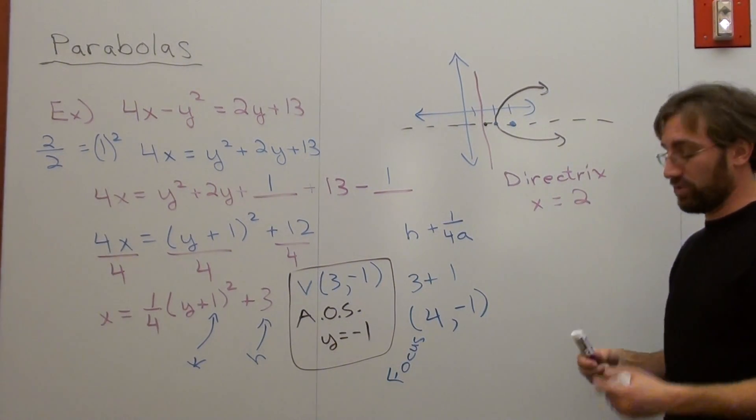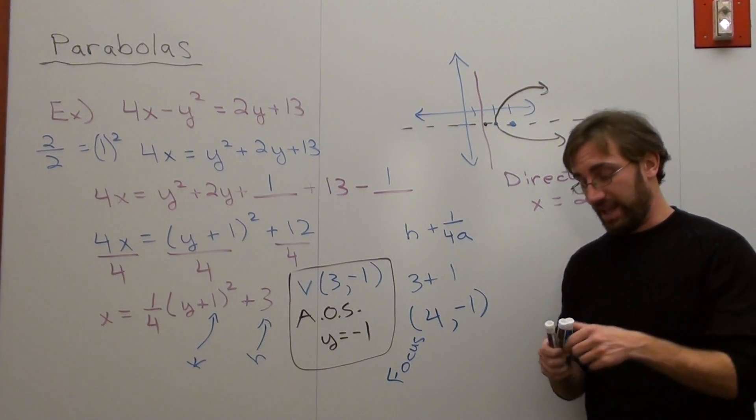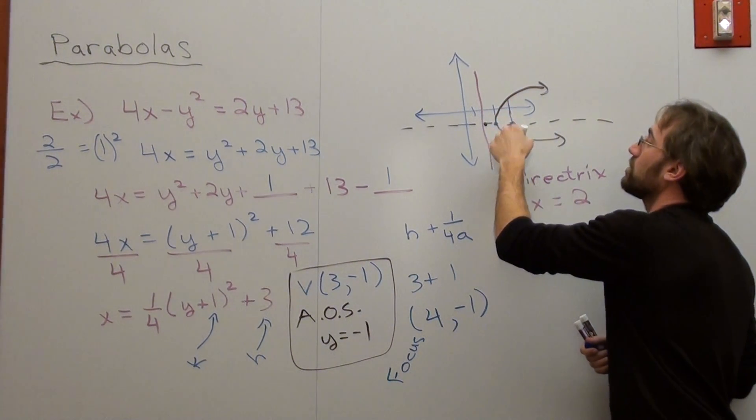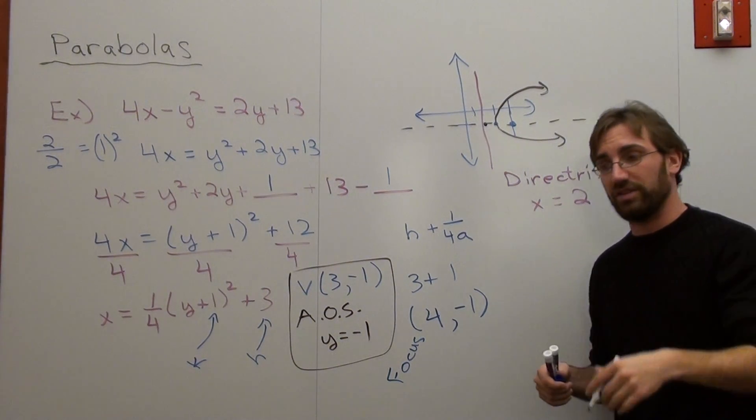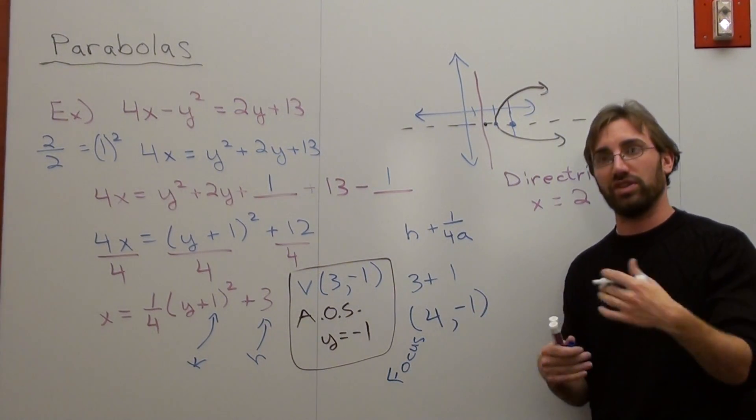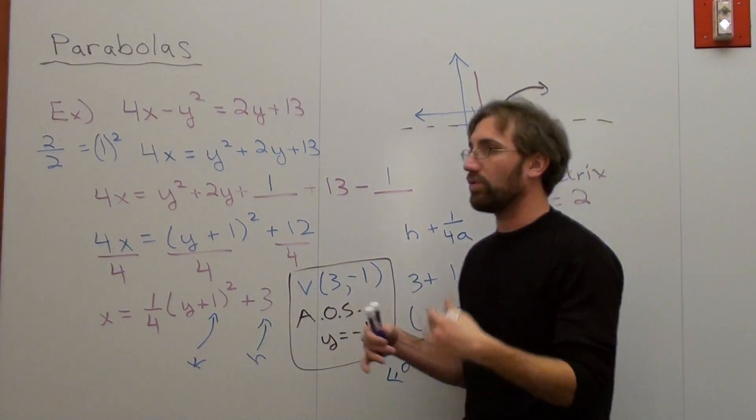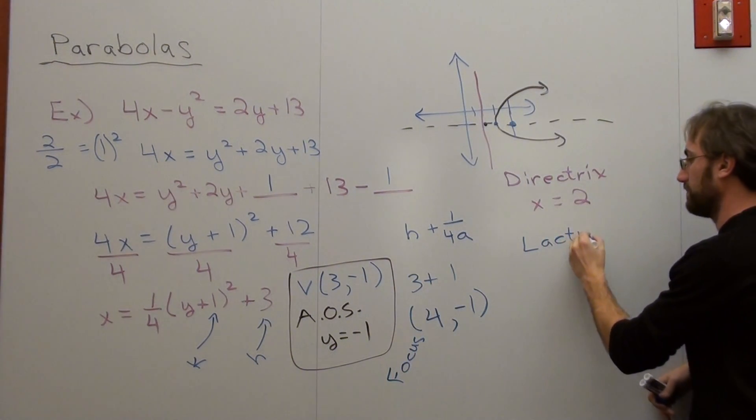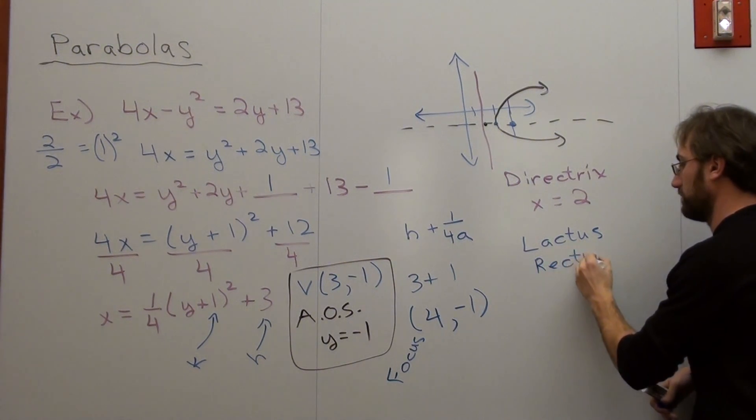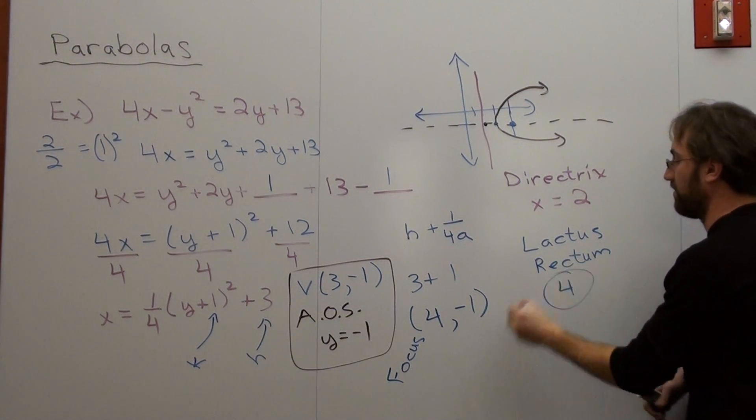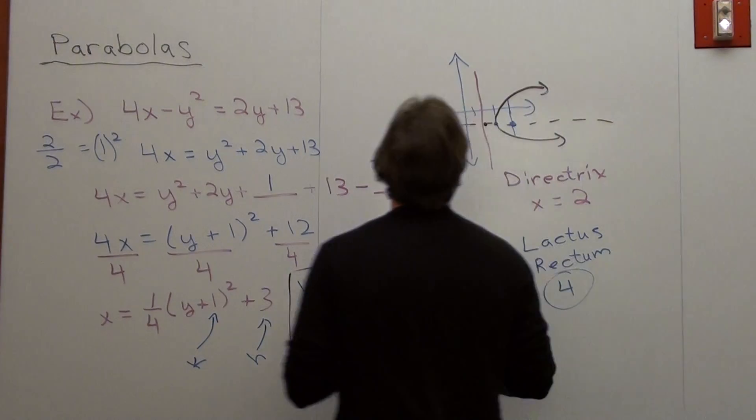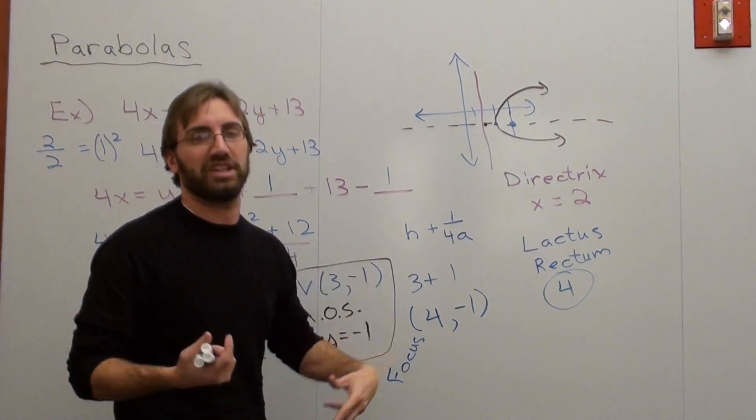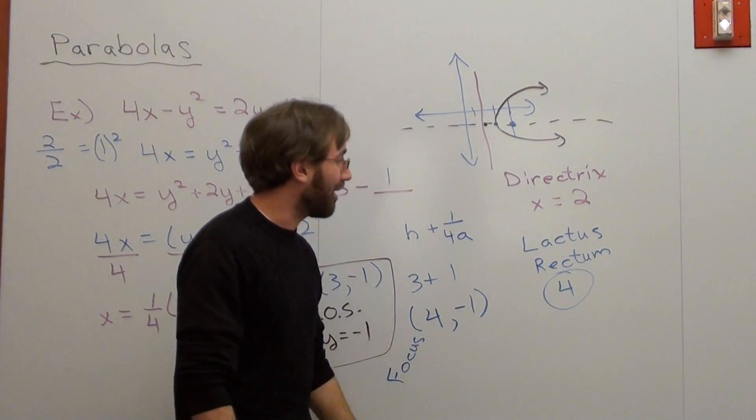And then the last part is the latus rectum. And the latus rectum is a length. And what I'm asked to do is find the length of this line that crosses through the focus and here's the two points. And the formula for that is the same as the other one. It's 1 over the absolute value of a. That's 1 over 1 fourth. So the latus rectum comes out to be 4. It's 4 units across.